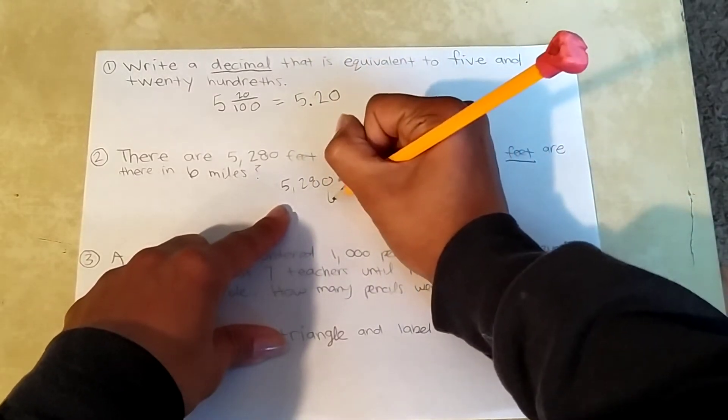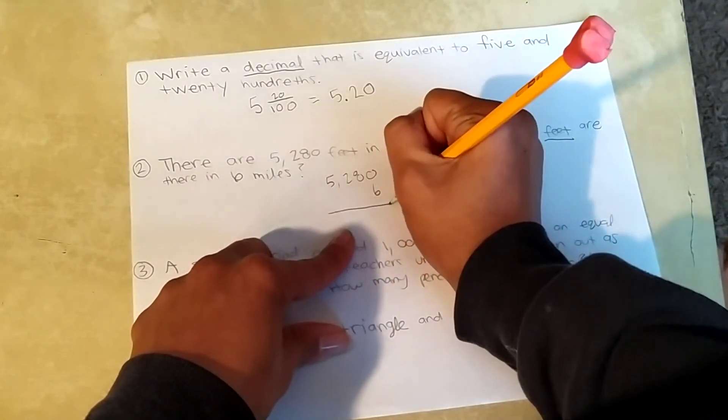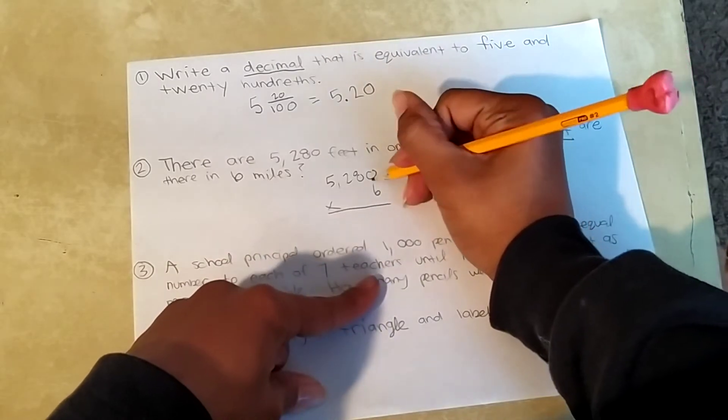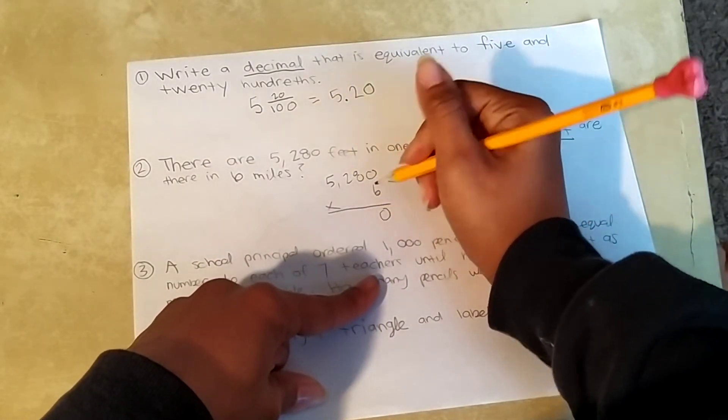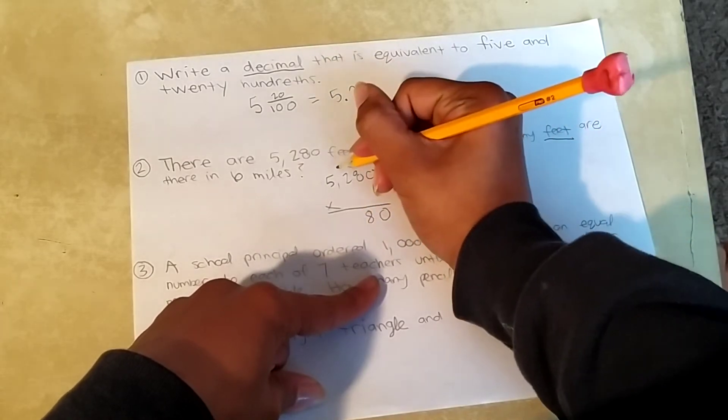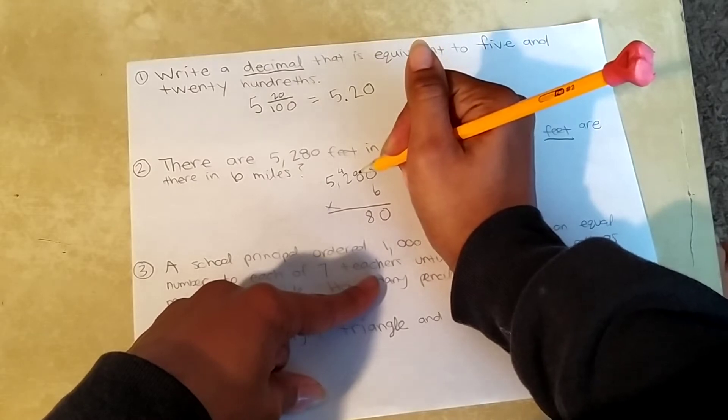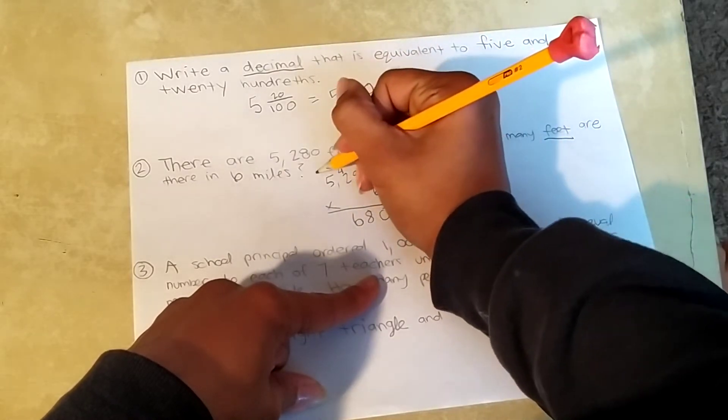Times six. Okay. Six times zero, zero. Six times eight, 48. Carry my four. Six times two is 12. 12 plus four is 16. Carry the one.